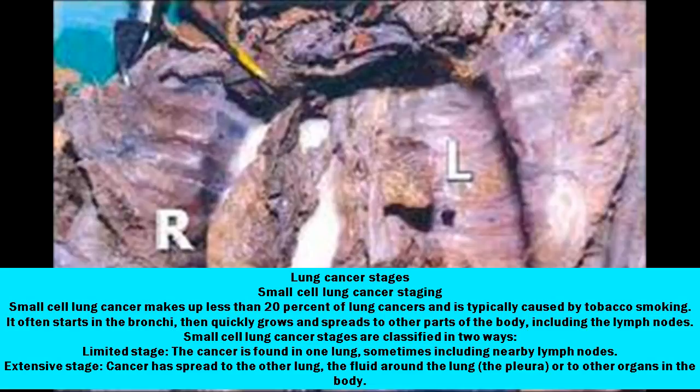Small Cell Lung Cancer stages are classified in two ways. Limited Stage: the cancer is found in one lung, sometimes including nearby lymph nodes. Extensive Stage: cancer has spread to the other lung, the fluid around the lung (the pleura), or to other organs in the body.